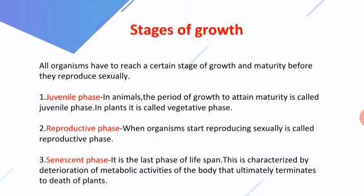The second phase is the reproductive phase — when the organism starts reproducing sexually, that period is called the reproductive phase. The third is the senescent phase, the last phase of the lifespan. It is characterized by deterioration of metabolic activities of the body that ultimately terminates in death. These three phases — juvenile, reproductive, and senescent — are important and may be asked as a three-mark question in the examination.